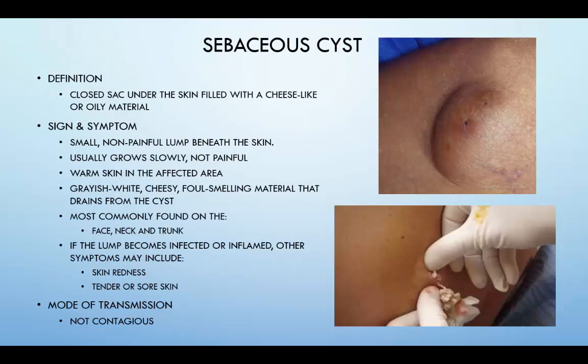A sebaceous cyst is a closed sac under the skin filled with a cheesy or oily material. Signs and symptoms include small, non-painful lumps underneath the skin. Growth is usually very slow and typically is not painful, though the skin may be warm to the touch. Grayish-white, cheesy, and sometimes foul-smelling material can drain from the cyst. This is most commonly found on the face, neck, and trunk. If the lump becomes infected or inflamed, symptoms may include skin redness, tenderness, or sore skin. Fortunately, sebaceous cysts are not contagious.